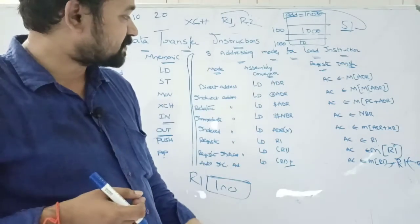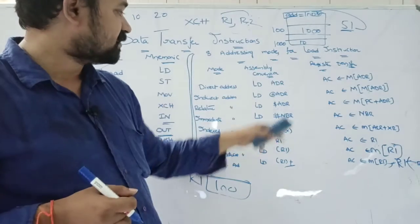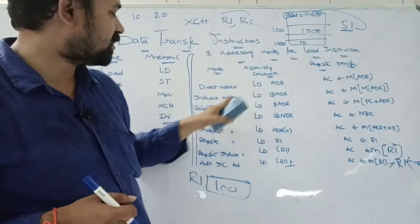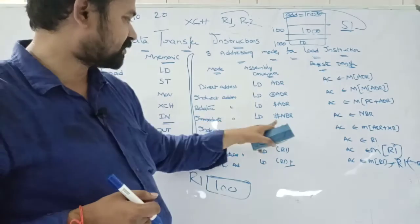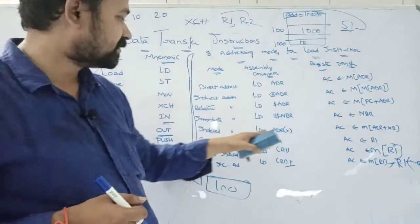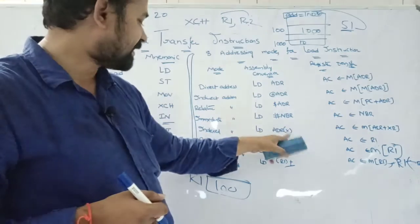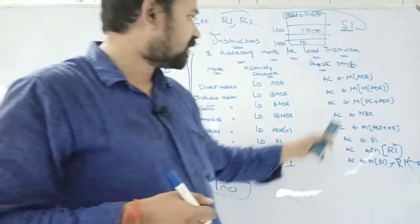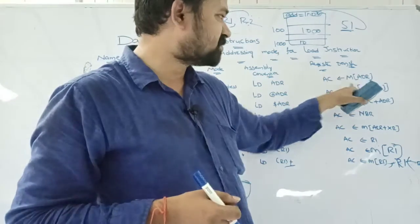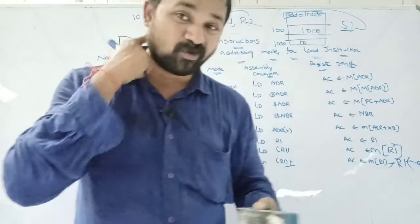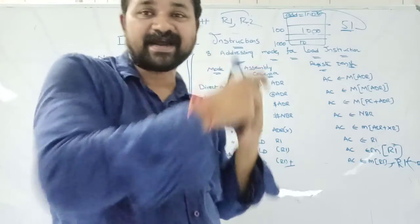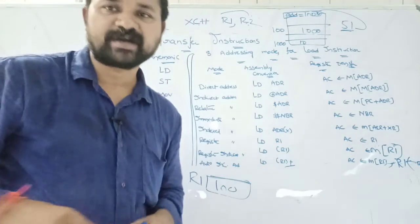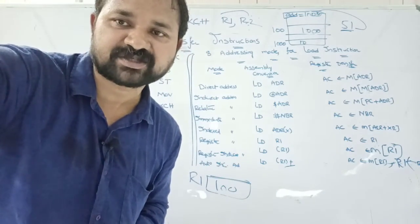In summary, these are the data transfer instructions with their addressing modes and assembly conventions: '@' represents indirect address, '$' represents relative, '#' represents immediate, and 'X' represents indexed. 'M' specifies the memory word at a given address. This concludes the topic of data transfer instructions.